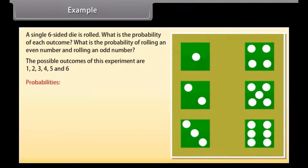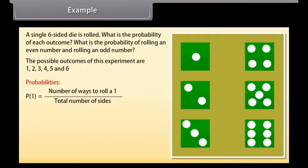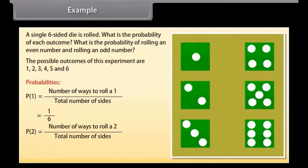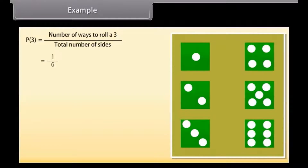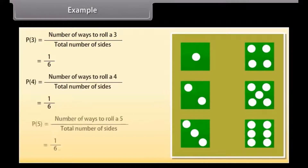Now let's find probabilities. Probability of 1 = number of ways to roll a 1 by total number of sides = 1/6. Probability of 2 = 1/6. Similarly, probability of 3 = 1/6. In the same way, we find the probabilities of 4, 5, and 6 — each equal to 1/6.